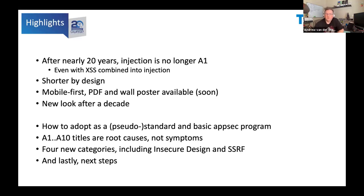Finally, we've normalized all of the titles to be root causes and not symptoms. Sensitive data exposure is the outcome of a root cause, so we've sprinkled that around the items it actually includes. That deduped a lot of CWEs from many items that were mixed in the previous version, so it's a lot easier to comply with the OWASP Top 10 now because it has greater focus on root causes. We also have four new categories, including insecure design and SSRF.